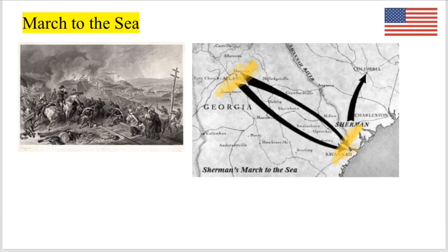Ultimately, Grant met Lee at Appomattox Courthouse in Virginia, and the Confederates surrendered on April 9, 1865, effectively ending the war. This was the most costly and devastating war in the history of the United States. Not only did slaves gain the freedom they needed, but they also received many rights that were not guaranteed to them before. Thanks so much for watching, and hope to see you in the next one when we continue the story of America.